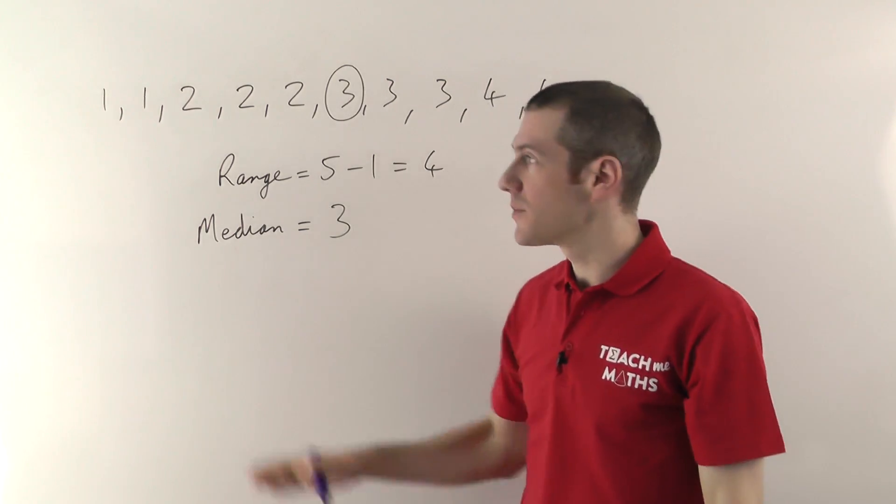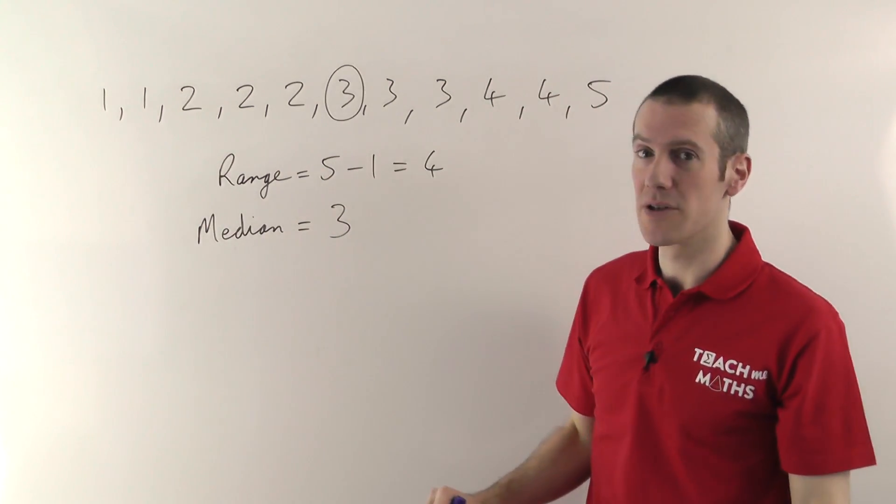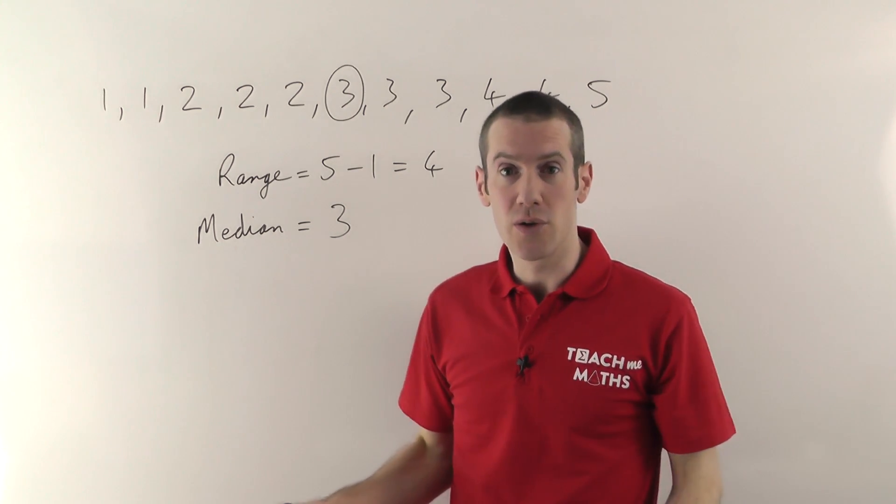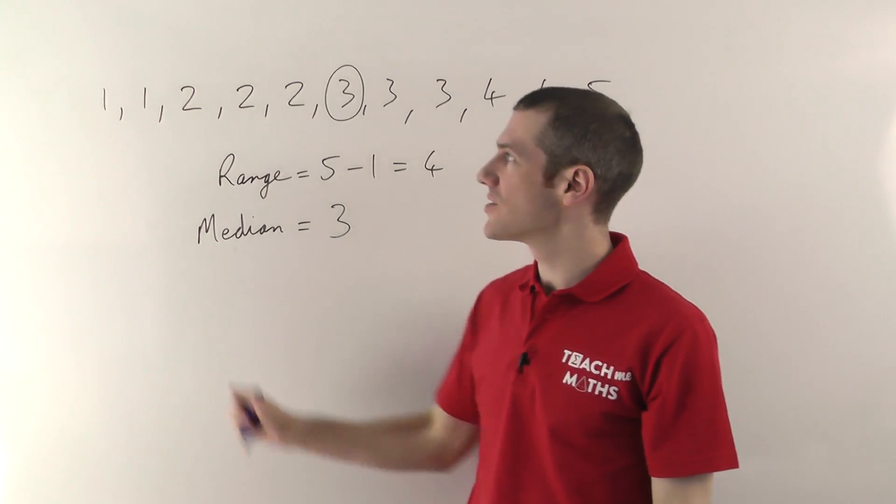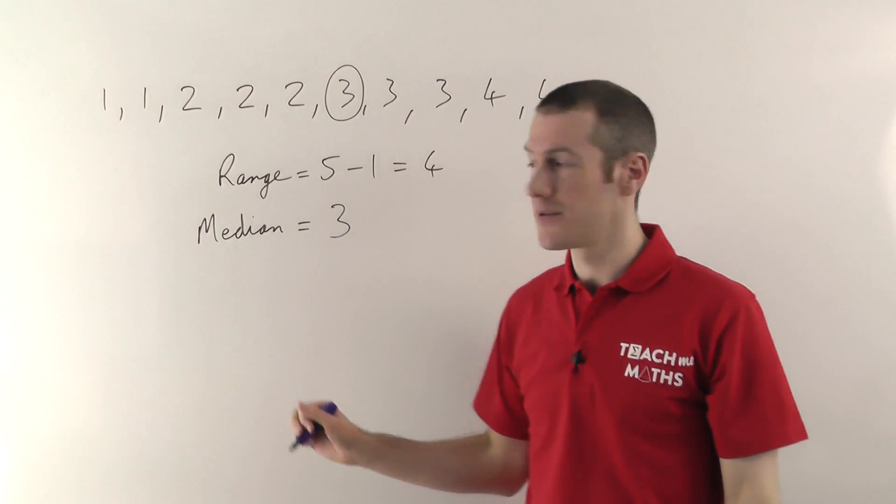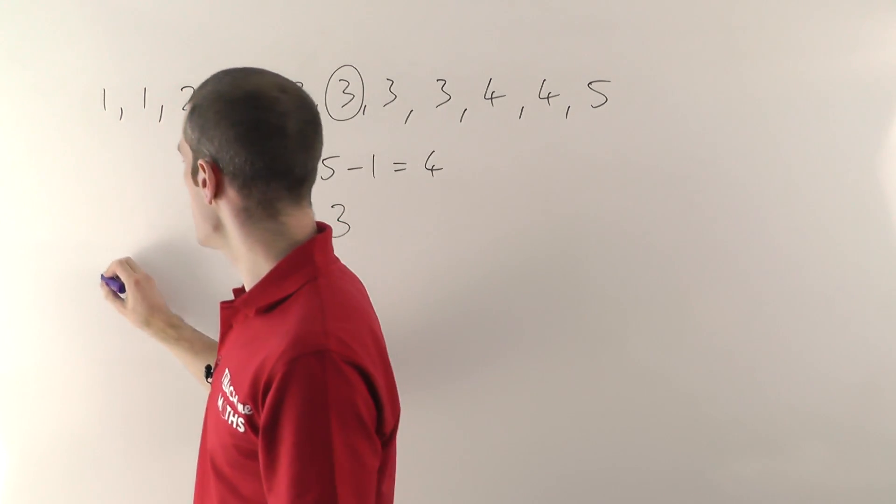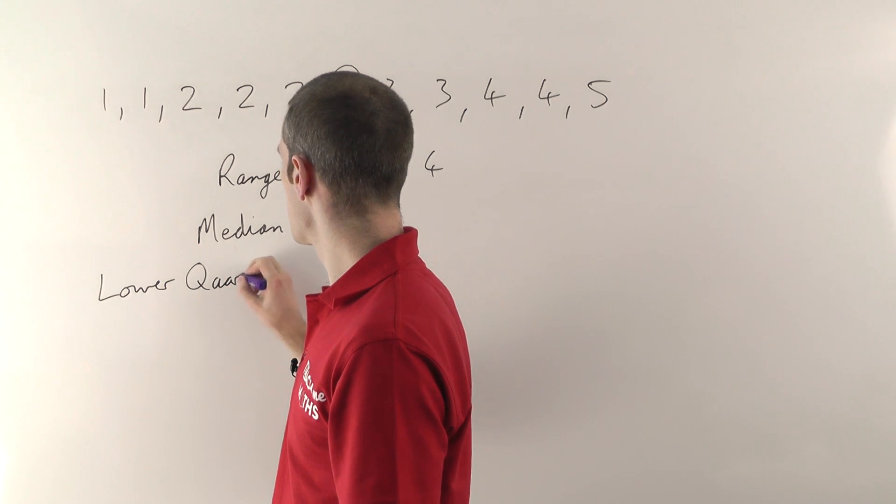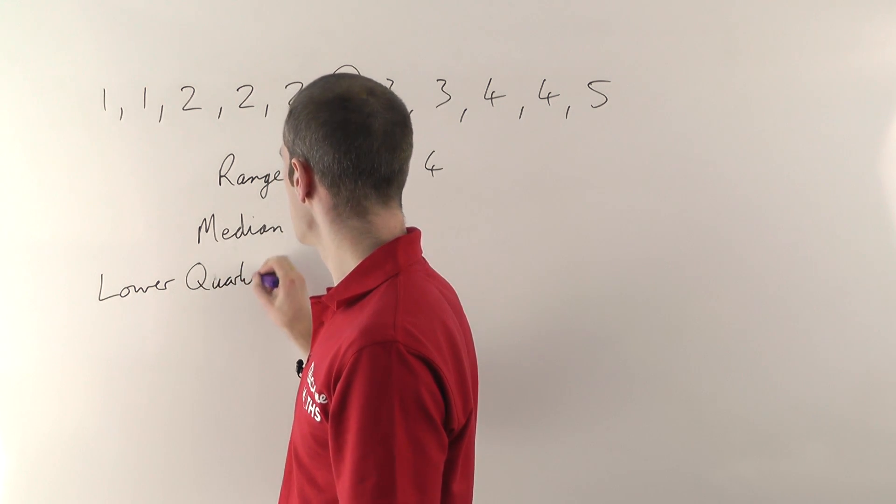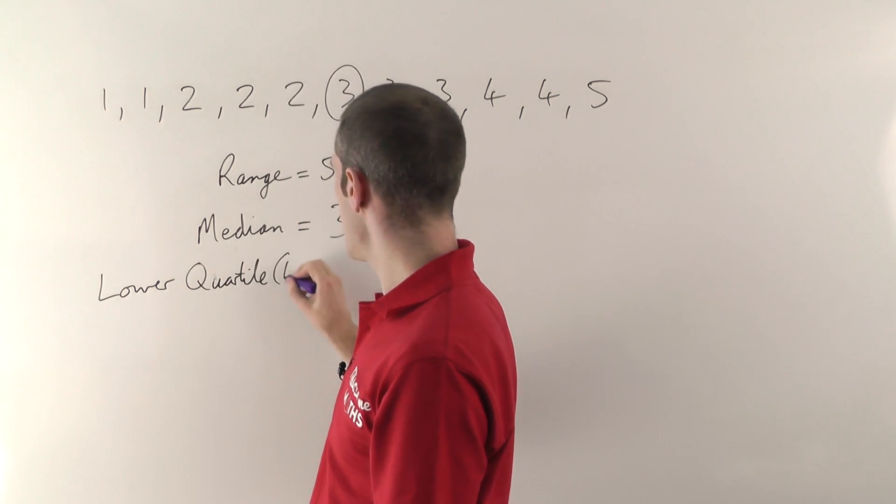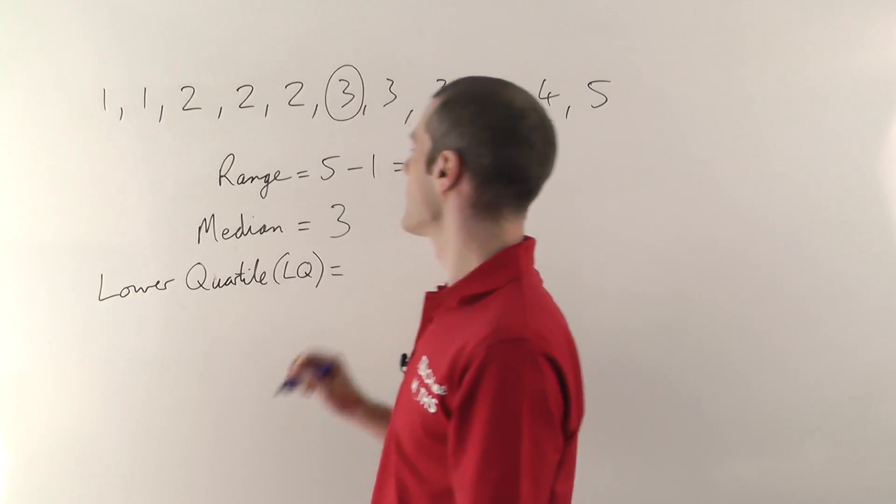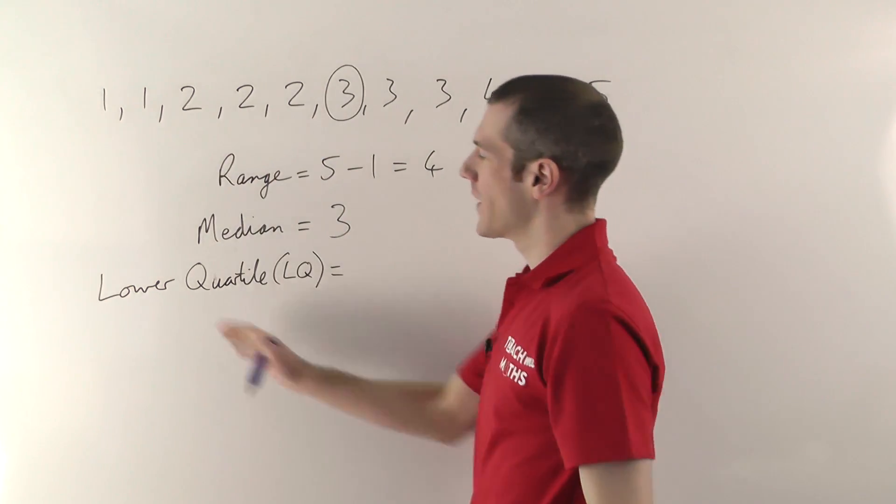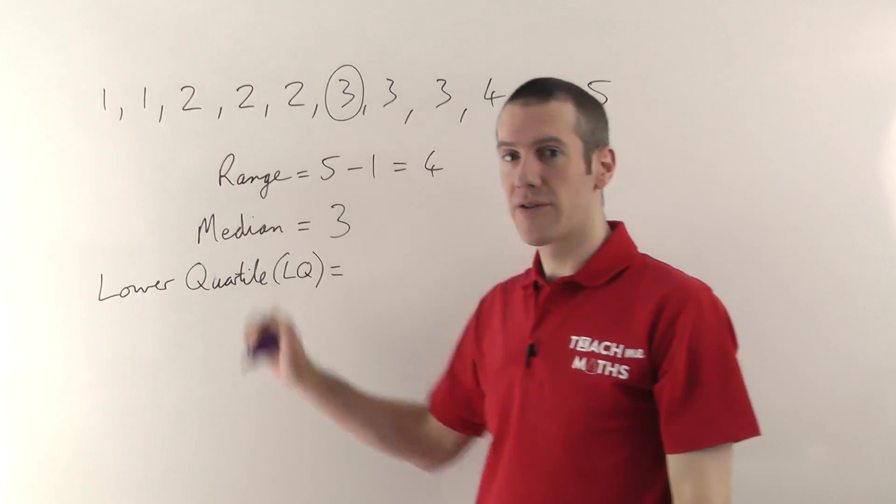Now if the median is the number that's halfway through the list of numbers, the quartiles - well first of all, if we do the lower quartile, the lower quartile is the one that's a quarter of the way through the list of numbers. So the lower quartile, often that's abbreviated LQ. So as I say, median is the one that's halfway through the numbers, the lower quartile is the one that's a quarter of the way through.